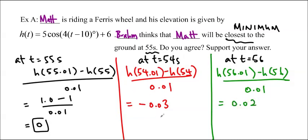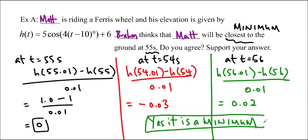So we're going from a negative to a positive. So yes, it is a minimum. Or in other words, Matthew is at his lowest point. Literally.